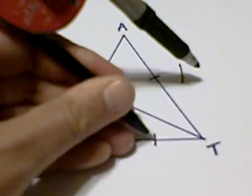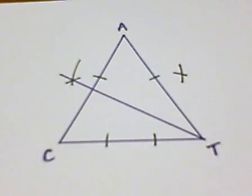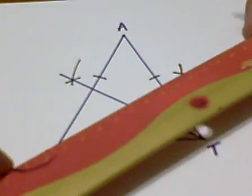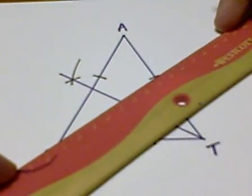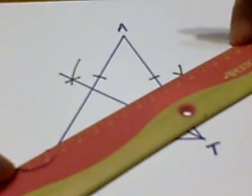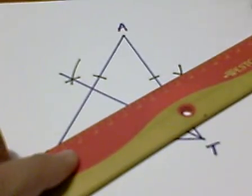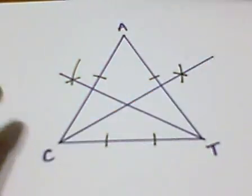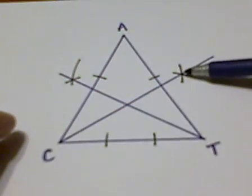And then from each of those intersection points, we'll strike arcs so that we can construct the bisector. And as you lay your compass down and pick up the straight edge, you want to make sure that your straight edge is very carefully aligned so that you go through the center of the intersections.